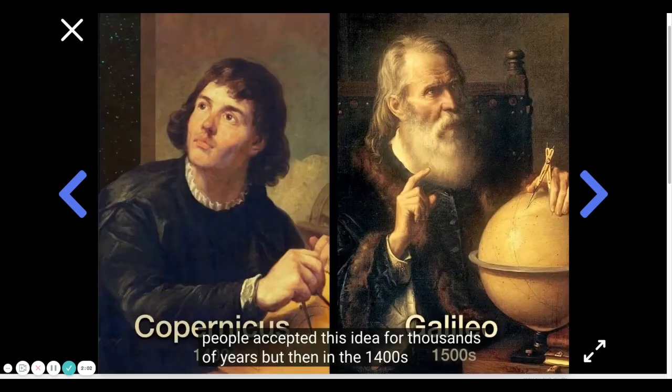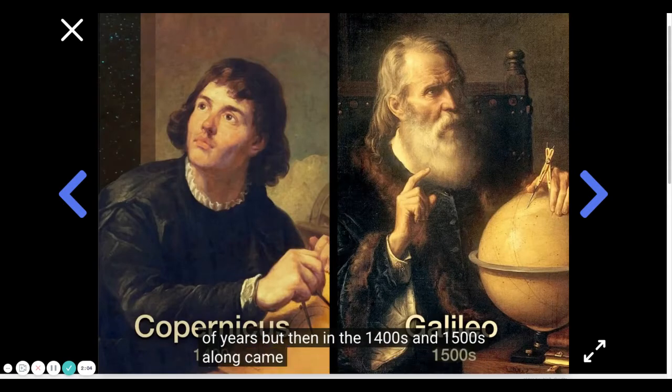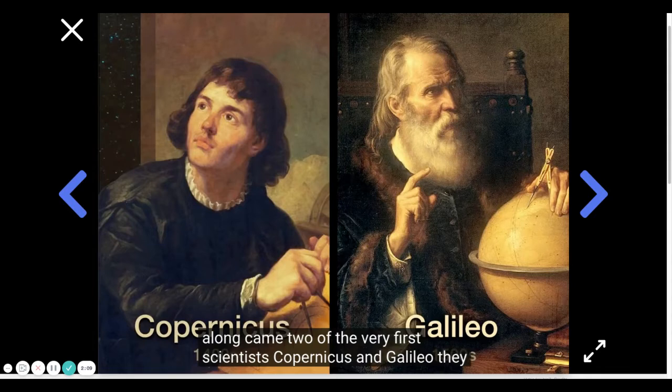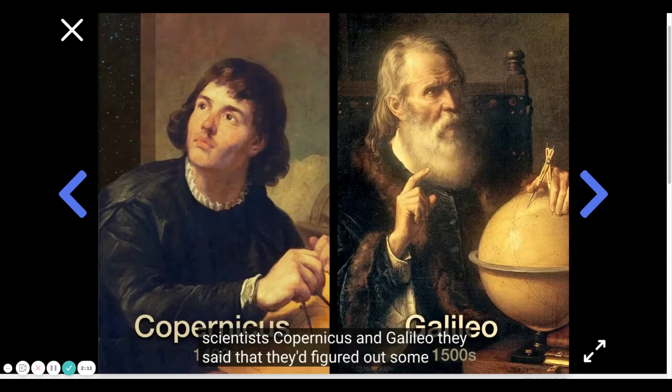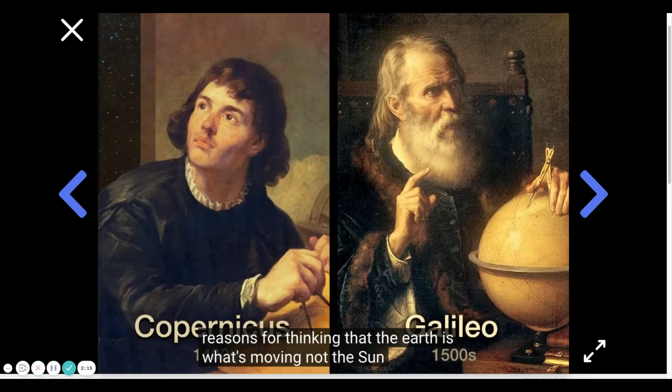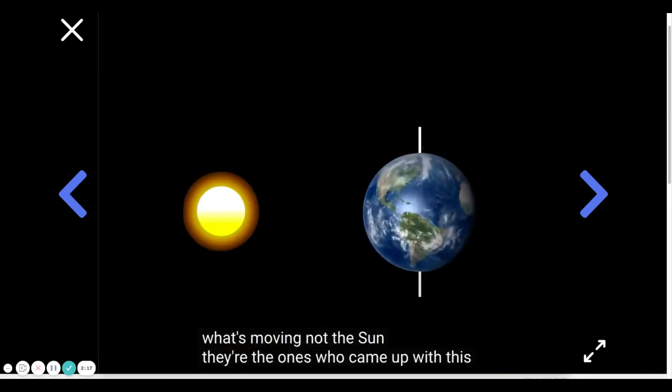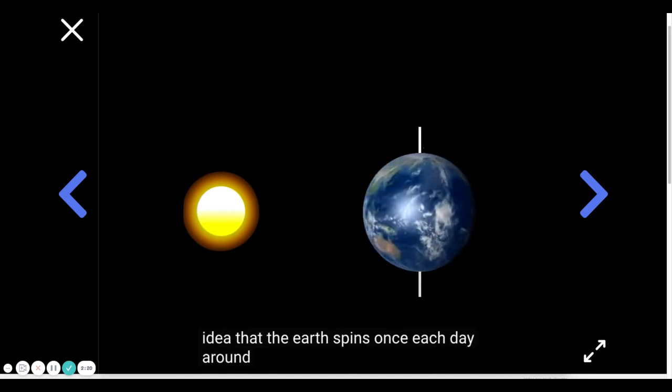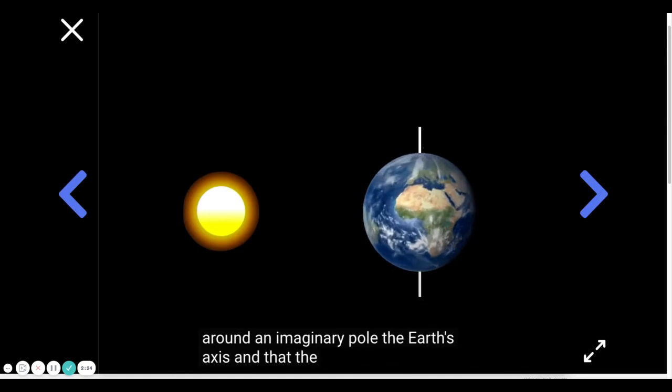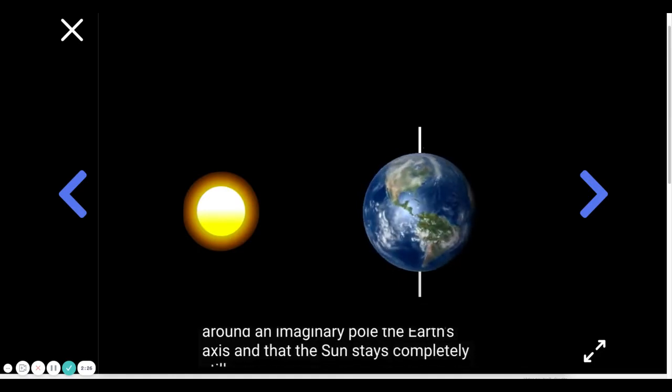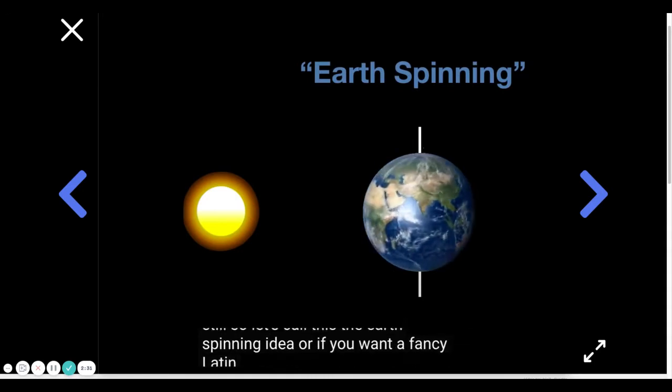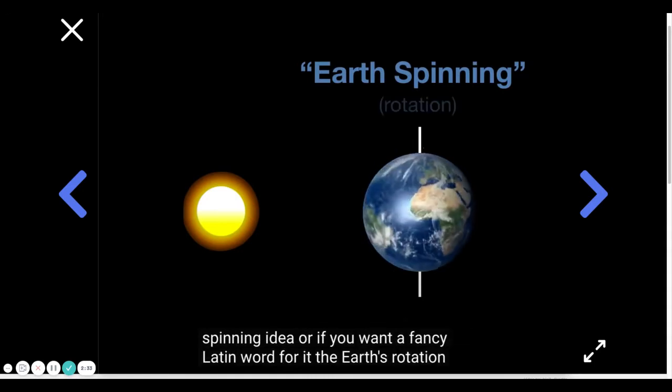But then in the 1400s and 1500s, along came two of the very first scientists, Copernicus and Galileo. They said that they'd figured out some reasons for thinking that the earth is what's moving, not the sun. They're the ones who came up with this idea that the earth spins once each day around an imaginary pole, the earth's axis, and that the sun stays completely still. So let's call this the earth spinning idea, or if you want a fancy Latin word for it, the earth's rotation.